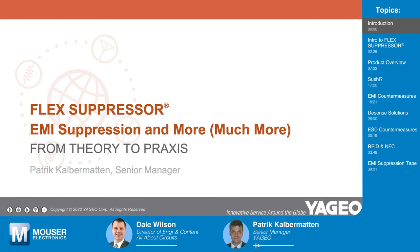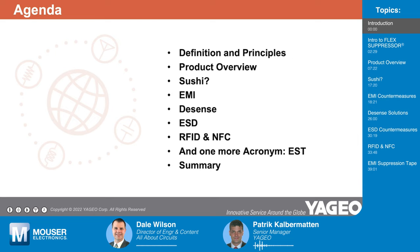We are going to cover definition and principles, having a short overview of the portfolio. We are going to talk about sushi — well, let's see what that's about. And then we are going to have many short names like EMI, ESD, RFID, NFC, strange words like desense, and even finish with one more acronym, ESD. But don't worry, you will understand what this is all about in a few minutes. And we will, of course, finish with a nice summary.